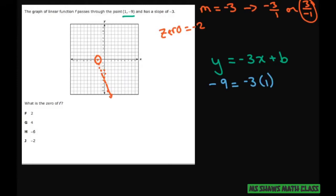Which b looks like it's -6. So -9 equals -3 plus b, add 3 to both sides and you get -6.